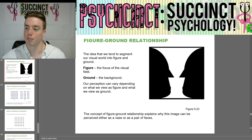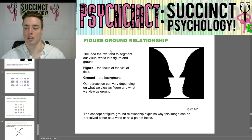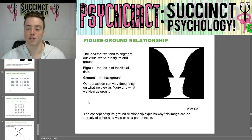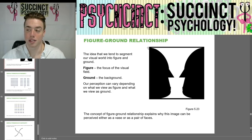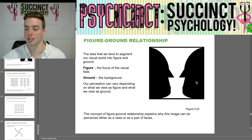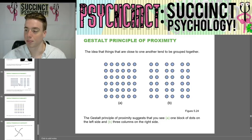Starting with figure-ground relationship — the idea that we tend to segment our visual world into figure and ground. Figure is the focus of the visual field and ground is the background. Our perception can vary depending on what we view as figure and what we view as ground. The concept explains why an image can be perceived either as a vase or as a pair of faces — it varies from person to person.